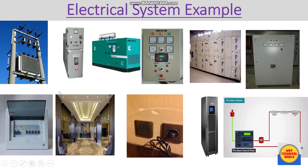Now I'm going to discuss the power distribution system in the building. Initially, we take power from the city line at 11 kV via HT cable, which is connected to the VCB panel — the high tension panel. Its output is connected to the primary side of a transformer, which steps down to 440 volts and is fed to the ATS panel. Due to interruptions in the city line, we install a DG — emergency power. This is a 500 kVA DG, and its power is also fed to the ATS panel.